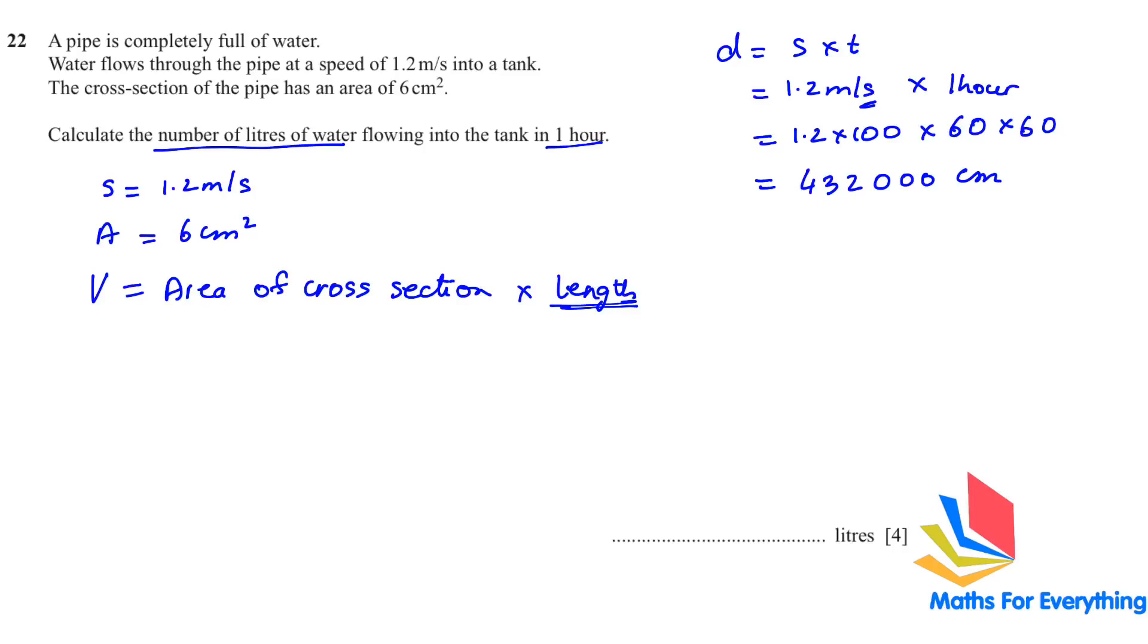So, this is our distance. What is the area? 6. What is the length? 43200. When you multiply this, you will get 259200. Because it's a volume, it's a cubic centimeter. To change a cubic centimeter into liters, one liter is equal to 1000 cubic centimeters. So, the number of liters will be 259200 divided by 1000. And we will get 2592 liters.